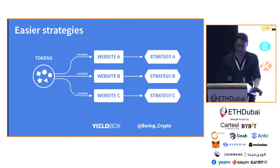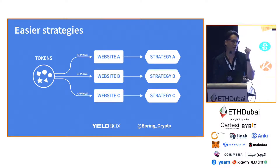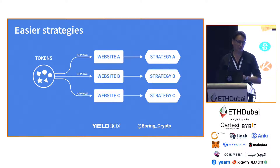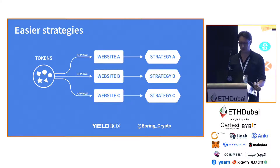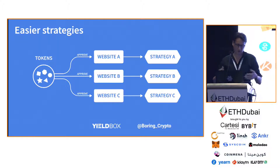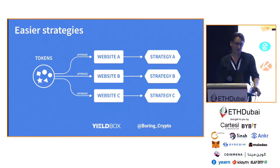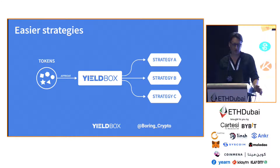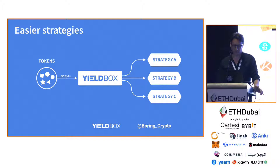So the user benefits. One of the main things of Yieldbox is a way to get yield, to get into strategies. It makes it much easier to get into strategies. Currently, if you want to get into a strategy, let's say Yearn, you have to go to the Yearn website. If you want another strategy, you have to go to another website, figure out how they work — they all have clunky UIs. You also have to approve your tokens to each of these websites. With Yieldbox, you just approve your tokens once and then assign to any strategy you want and move between strategies.